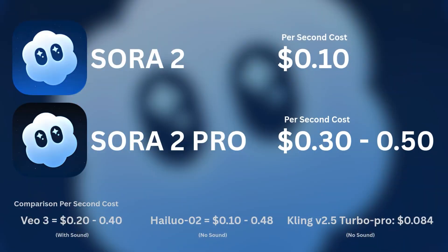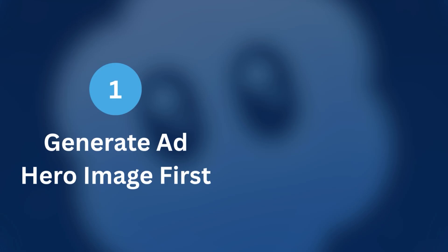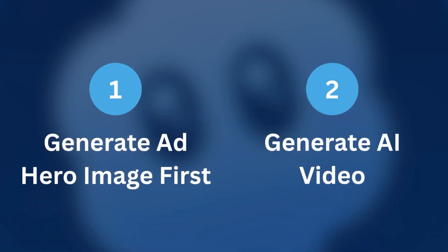Think about it — these can be incredibly expensive models to actually run and generate videos with. A lot of people start off by generating an ad concept with a person in it, maybe holding a product as an image first, and then to improve the accuracy of the output, put that into an AI video model tool to turn it into a video. But you can't do that anymore with Sora 2 if it contains a person.